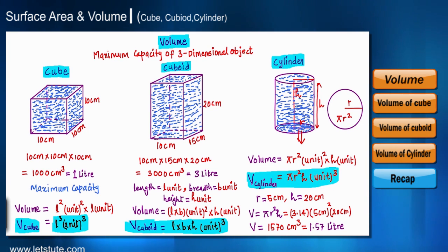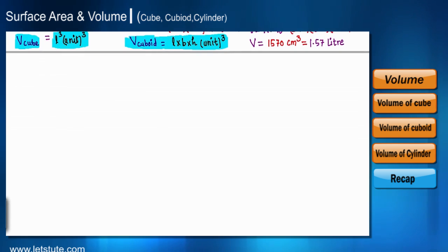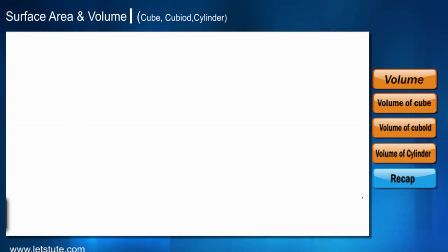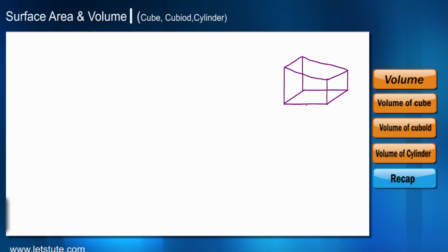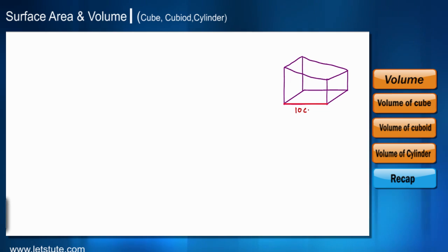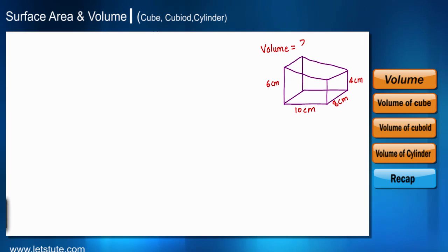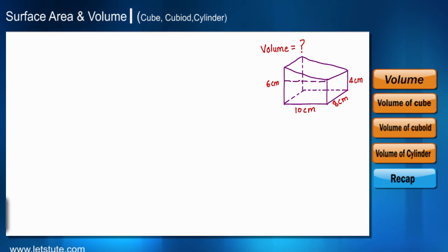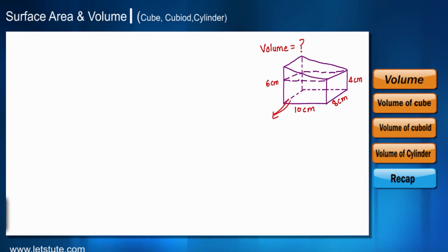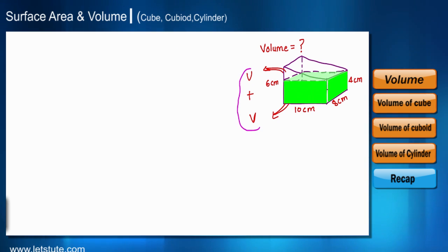So far we have learned about the volume of cube, cuboid, and cylinder — these are standard shapes. But sometimes we can have uneven shapes. This three-dimensional shape has length 10 centimeter, breadth 8 centimeter, and two different heights: 4 centimeter and 6 centimeter. To find its volume, we break it into two parts, find the volume of each part separately, and then add them to get the total volume.